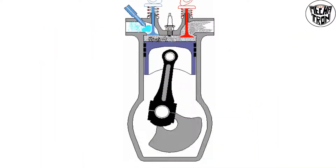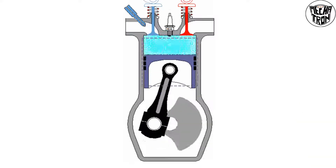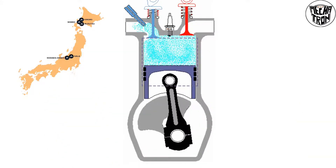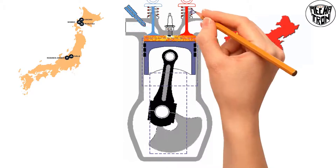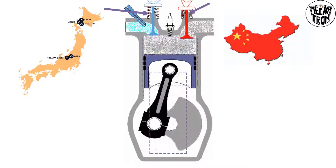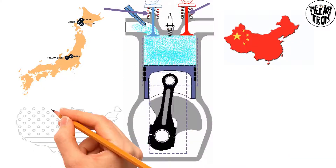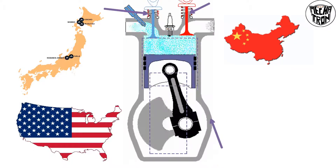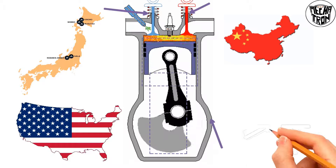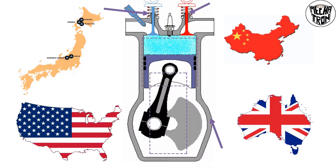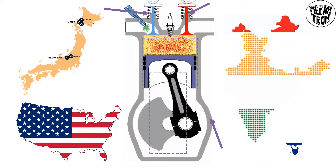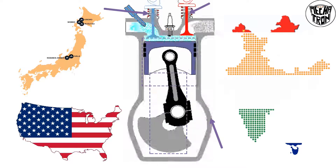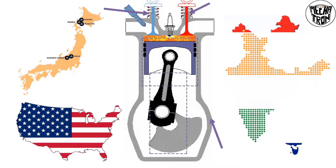For example, in this engine, the piston is manufactured in Japan, the shaft is manufactured in China, the walls are manufactured in United States, and the cylinder is manufactured in United Kingdom. Finally, all these parts are assembled together in India and made into an engineering product.